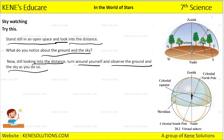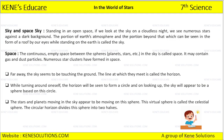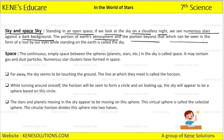If you are standing here, you have to observe the ground and the sky. Standing in an open space, if we look at the sky on a cloudless night, we see numerous stars against a dark background. The portion of the earth's atmosphere and the portion beyond that which can be seen in the form of a roof by our eyes while standing on earth is called sky.